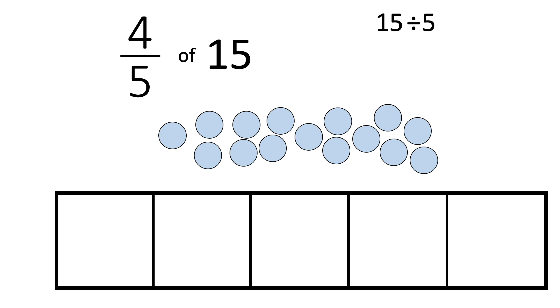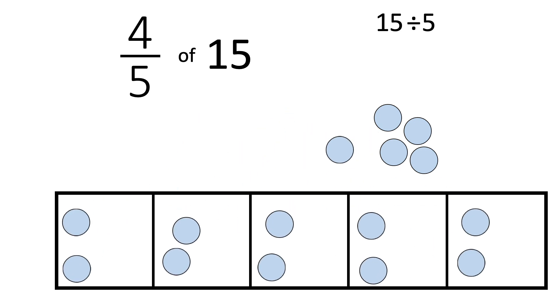So let's divide these fifteen counters into our five equal pieces. And here we can say fifteen divided by five is three. Because one-fifth of fifteen equals three. But we need four-fifths. So we need to multiply three by four.